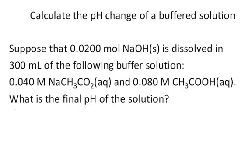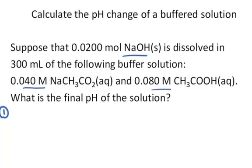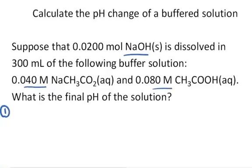Before we determine the final pH of the solution, let's determine the pH of the solution in the absence of the added sodium hydroxide. We recognize that there's a substantial amount of sodium acetate and acetic acid — conjugate acid-base partners — so this solution is going to behave as a buffer. I'm going to use the Henderson-Hasselbalch equation as a shortcut.